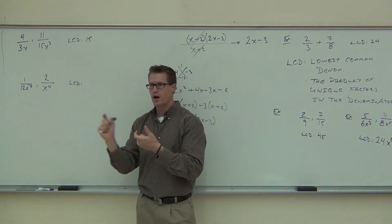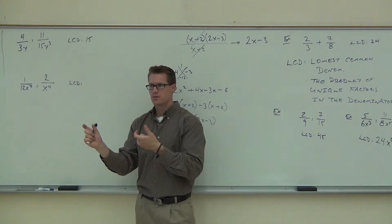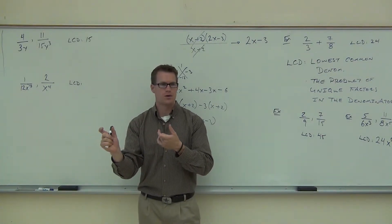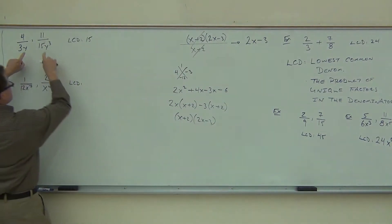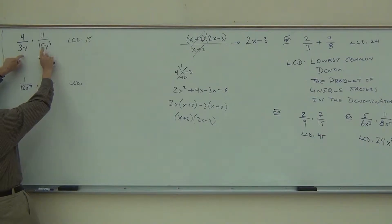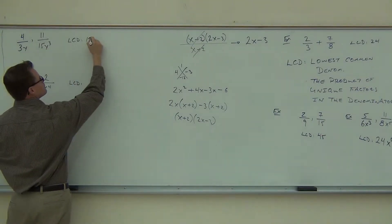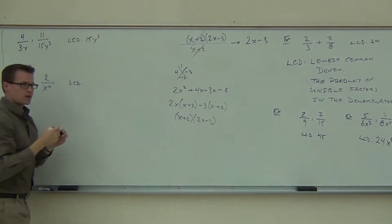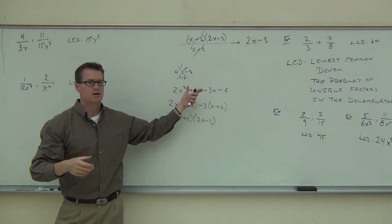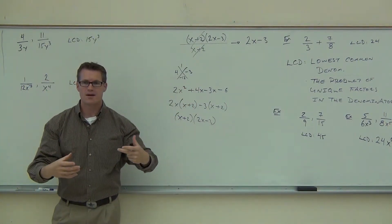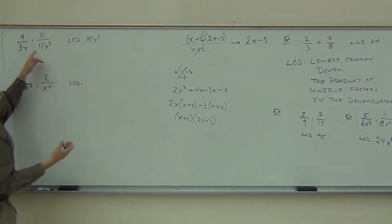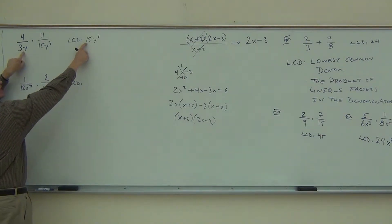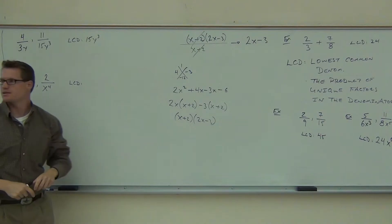What do we take as our LCD for the variable? Not y to the fourth, not y to the first — we need it to cover both. We look for the y's, and we take the largest power: y to the third. So the LCD is 15y³. Does it cover the three? Yes. Fifteen? Yes. Does it have at least a y? Yes. At least y to the third? Yes. That's what we're looking for.